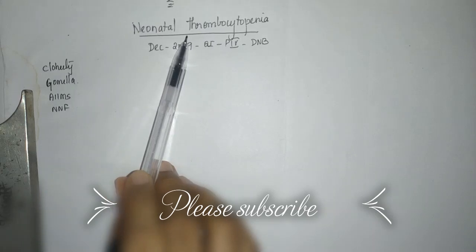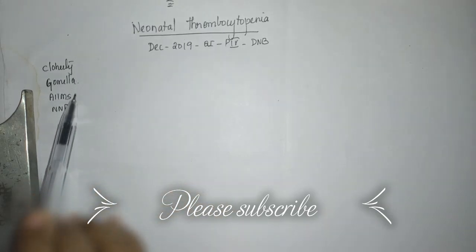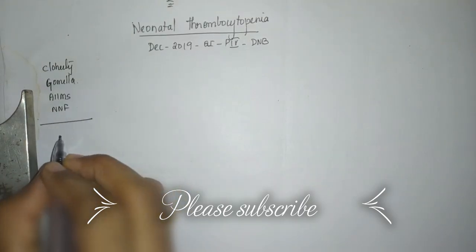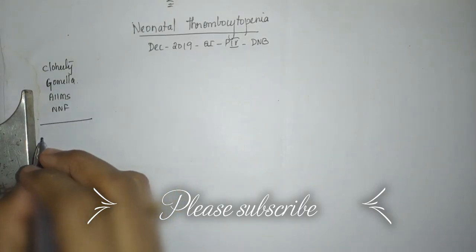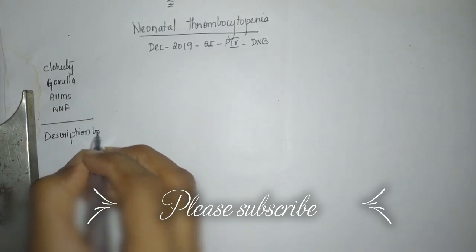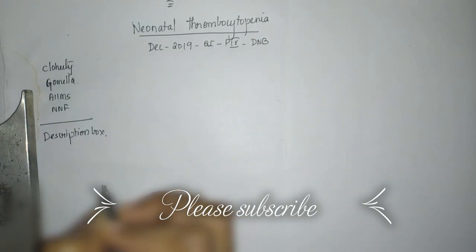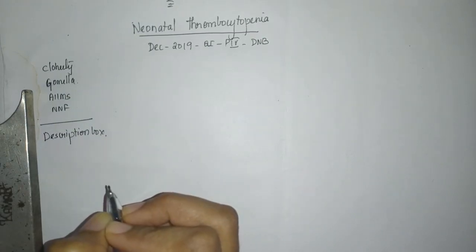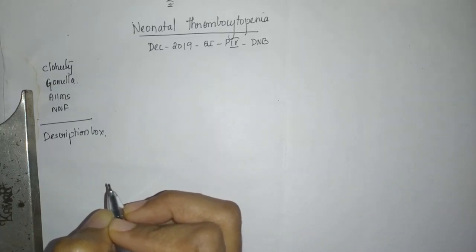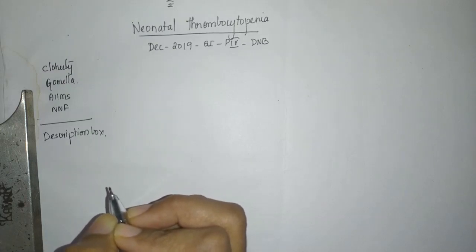The question was on neonatal thrombocytopenia. On the left you can see my references — I've taken these books because they will be available with all postgraduate students and you can cross refer to them in case you have any doubts. If I've told something wrong or made a mistake, I will update it in the description box. I'm apologizing in advance because this is going to be a single take and I literally have just 10 to 15 minutes left. I will try to keep this as short and sweet as possible.